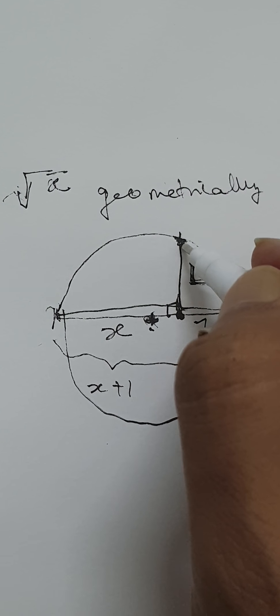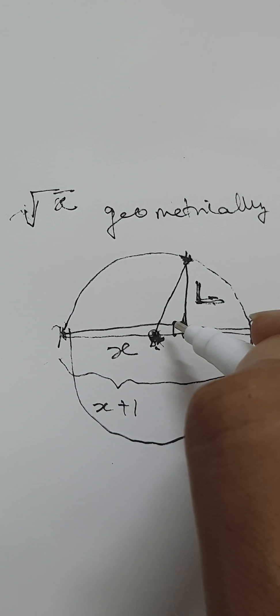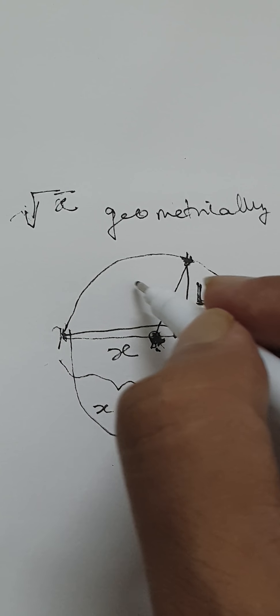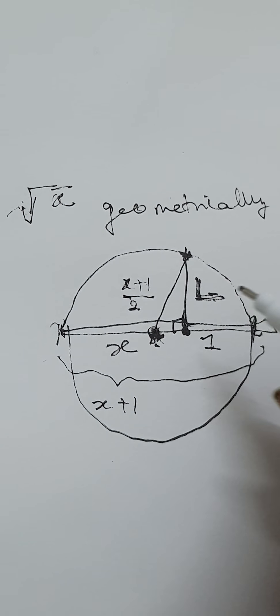If we draw this radius here, the radius is x plus 1 by 2, because x plus 1 is the diameter.